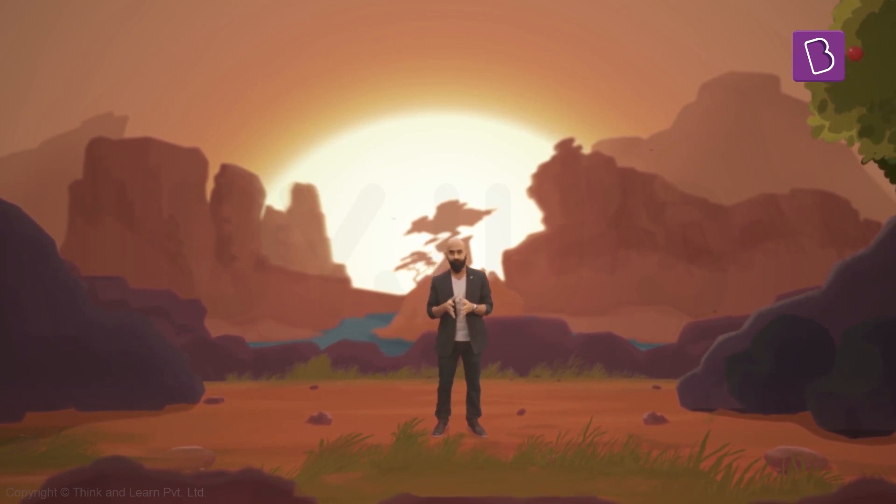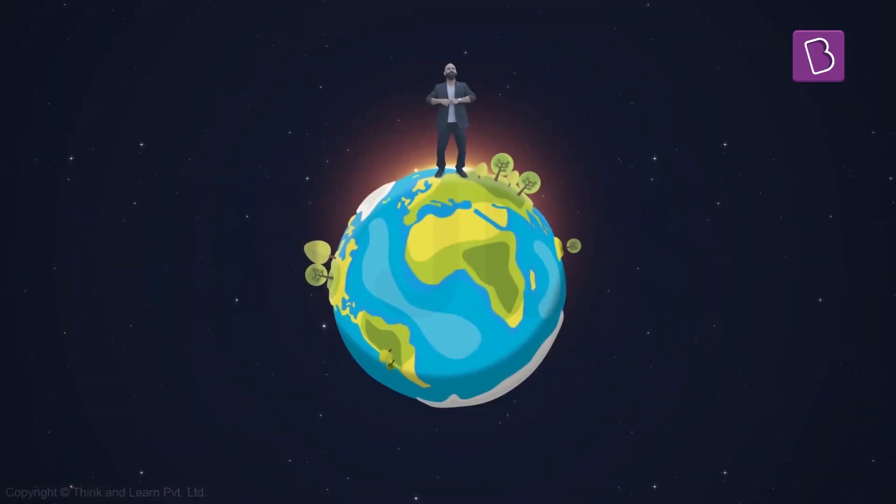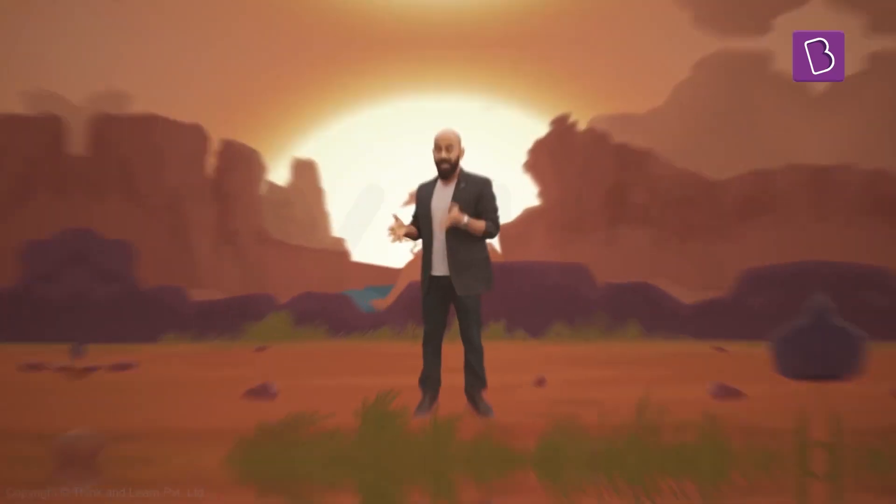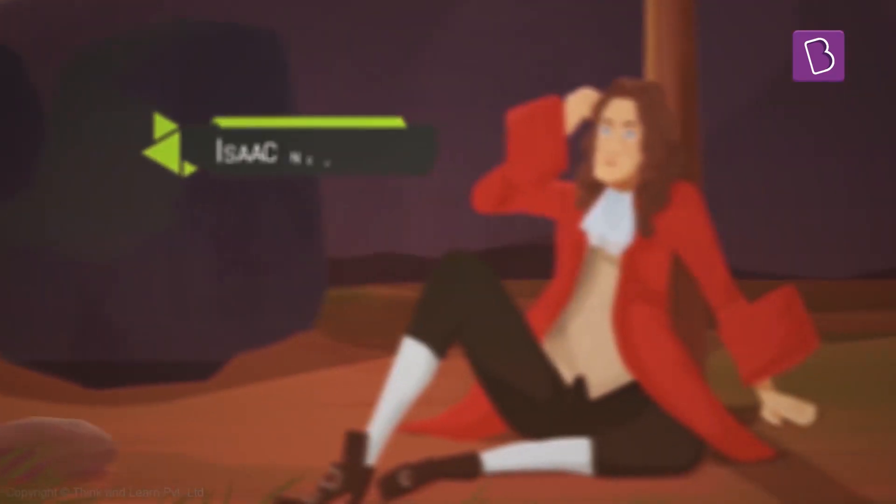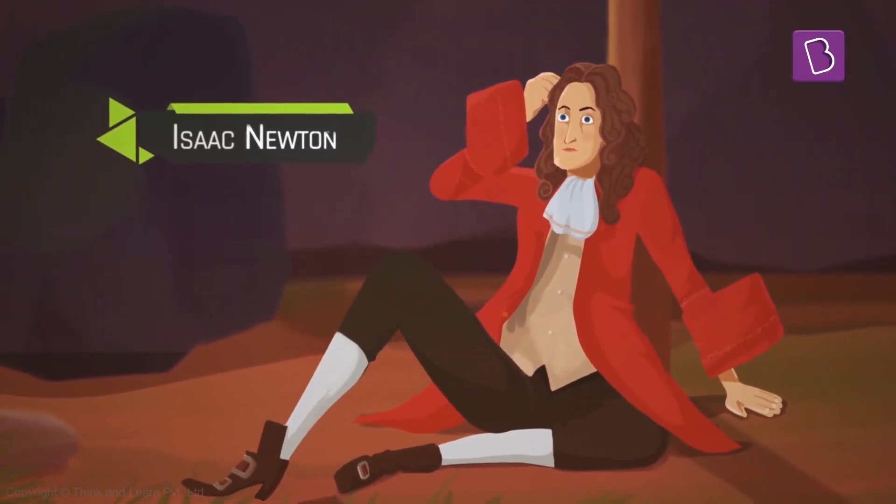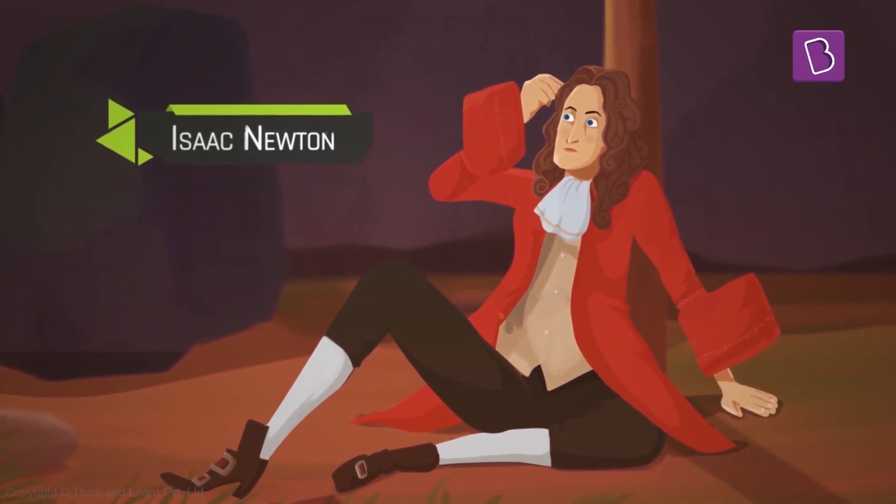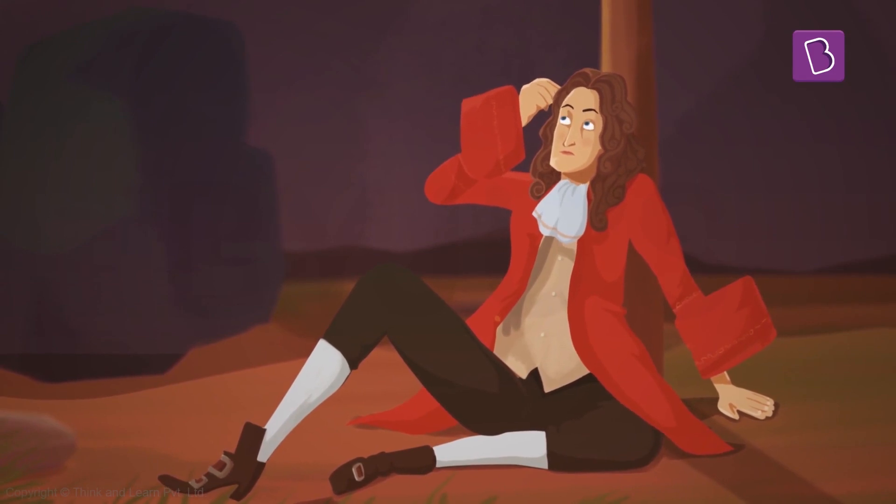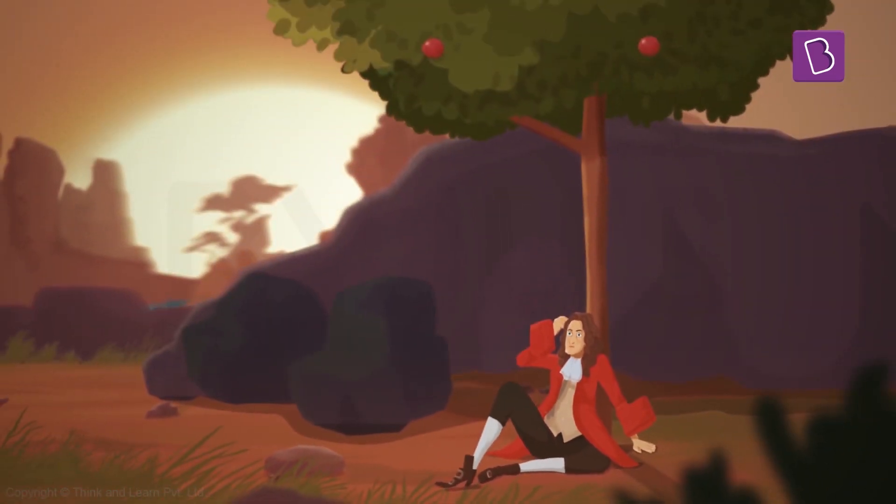Gravity is that attractive force that keeps us all stuck to the Earth. In the absence of gravity, everything on Earth will just fly away and float into space. It was Sir Isaac Newton, the famous English scientist, who figured out how gravity works. There's this famous story that says he was sitting under an apple tree one day and wondering about gravity.